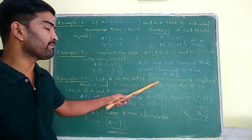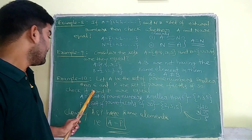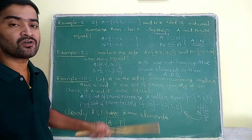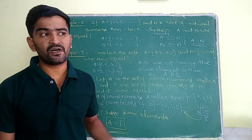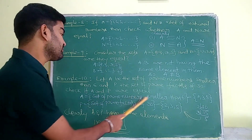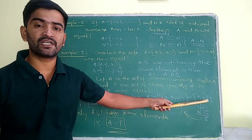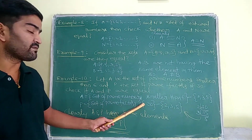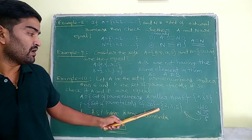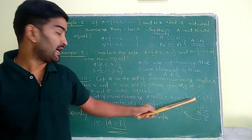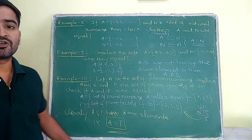Example 10: Let A be the set of prime numbers smaller than 6 and P be the set of prime factors of 30. Check if A and P are equal. Write in roster form: prime numbers less than 6 are {2, 3, 5}, and prime factors of 30 are also {2, 3, 5}. These two sets have the same elements, so A is equal to P.